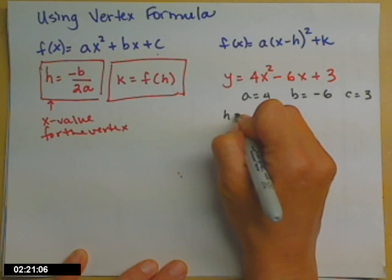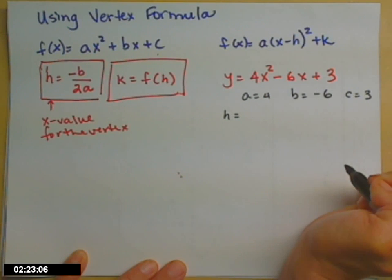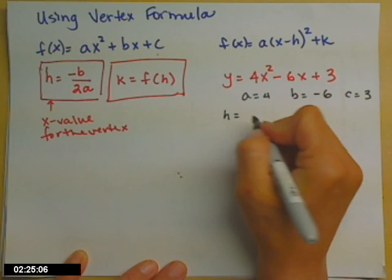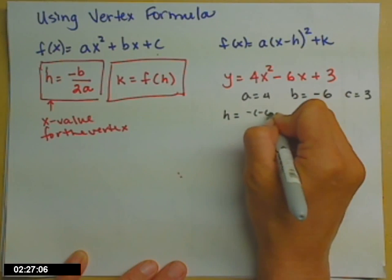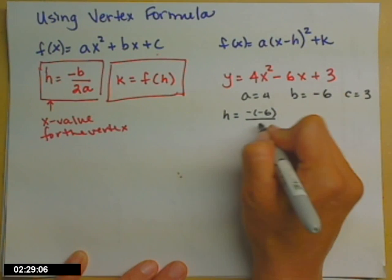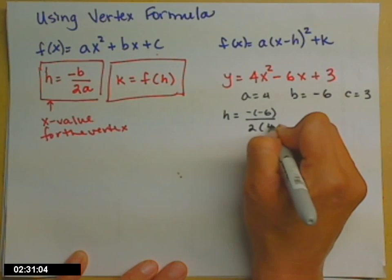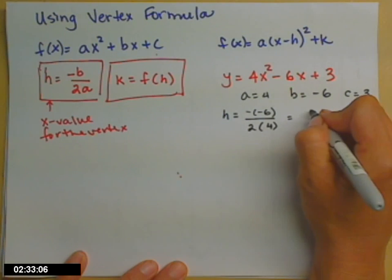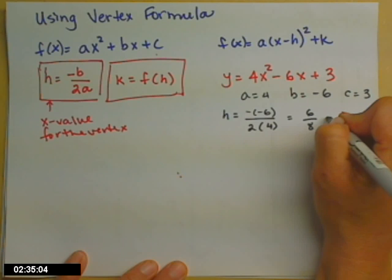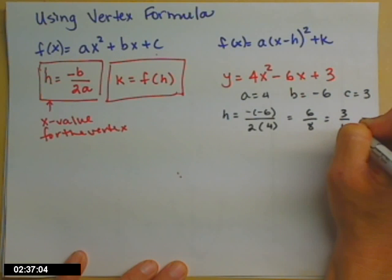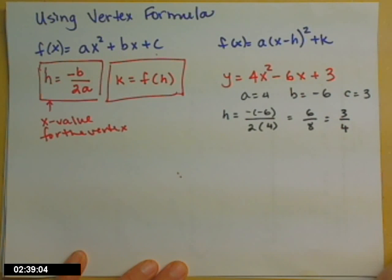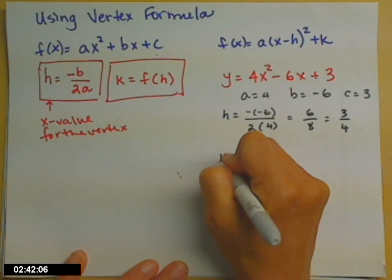So, h, the x part of my vertex, is equal to the opposite of b. So, b is currently negative 6. So, I need negative, negative 6, divided by 2 times a. So, we'll get 6 eighths, and I know you guys are going to reduce that and come up with 3 fourths. So, that's where the x part of the vertex is.